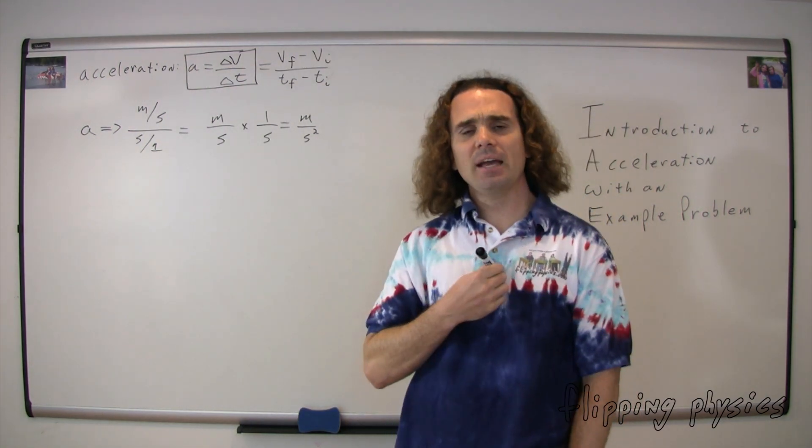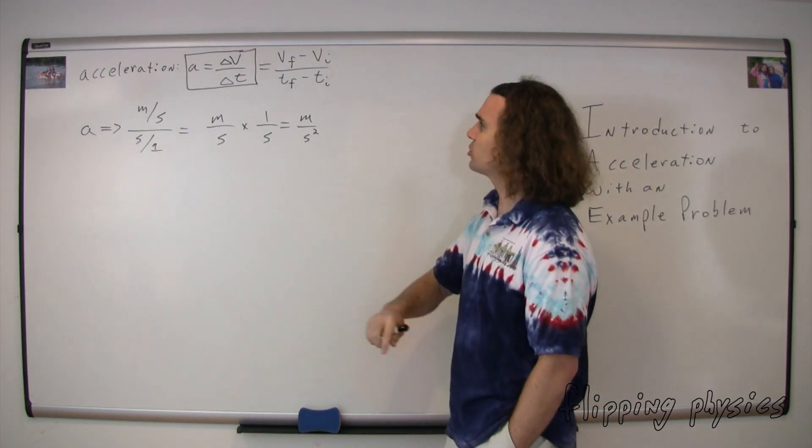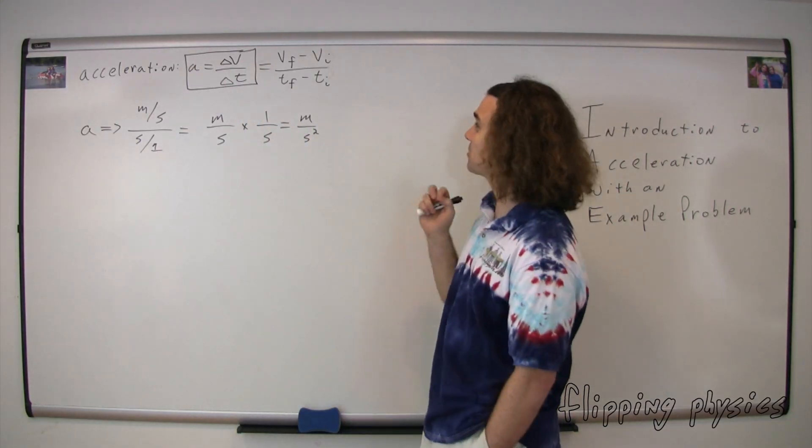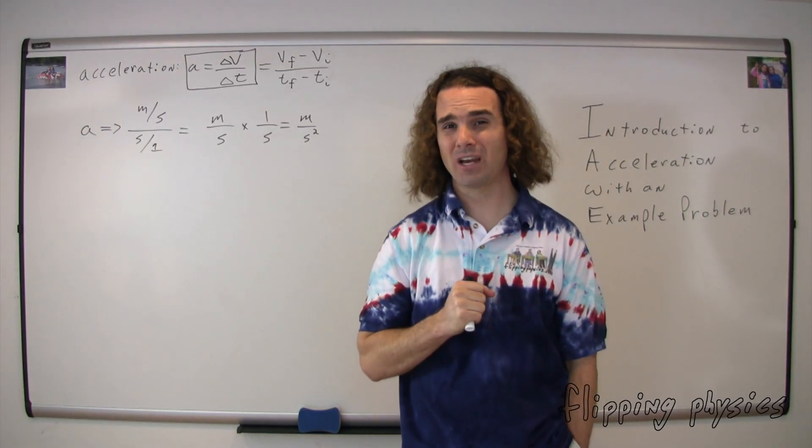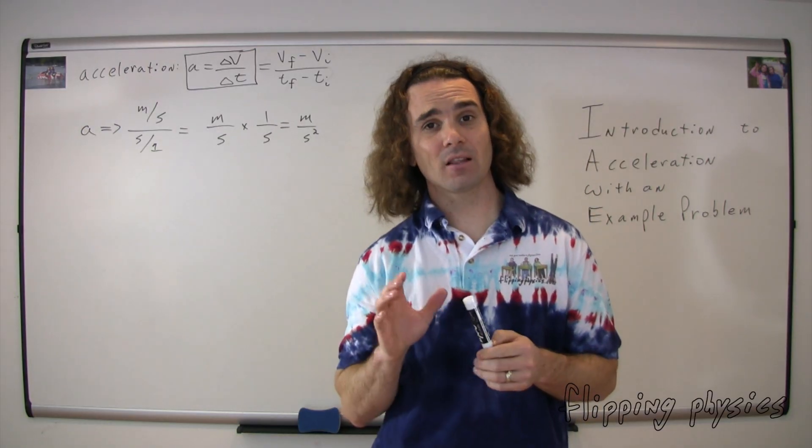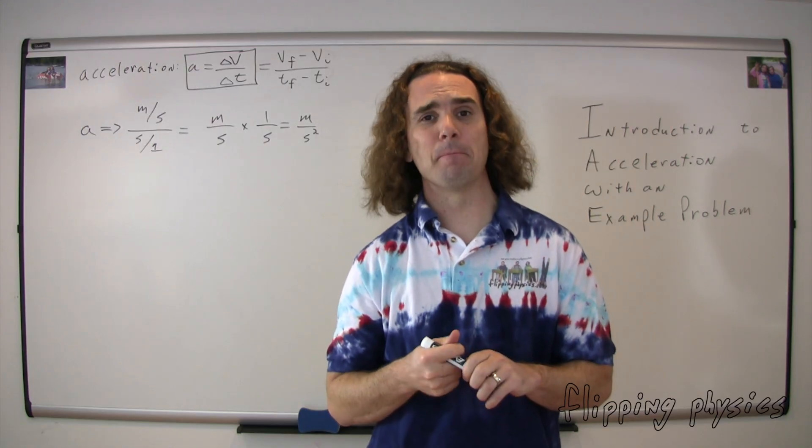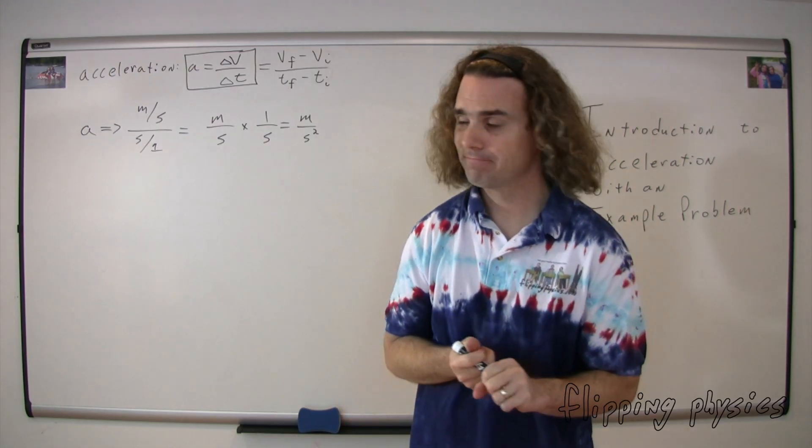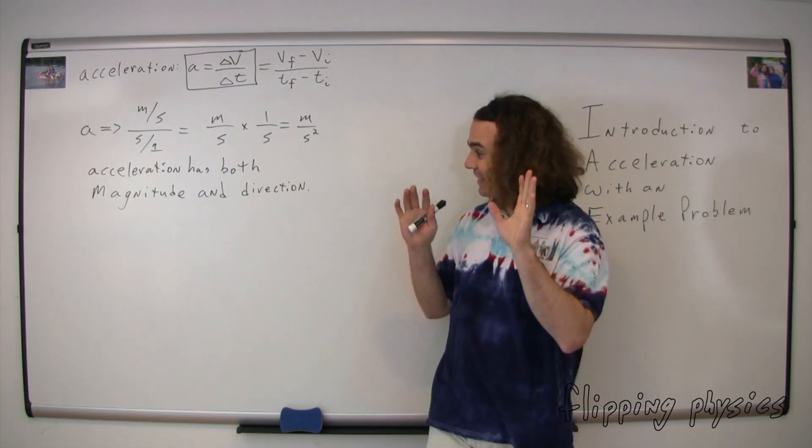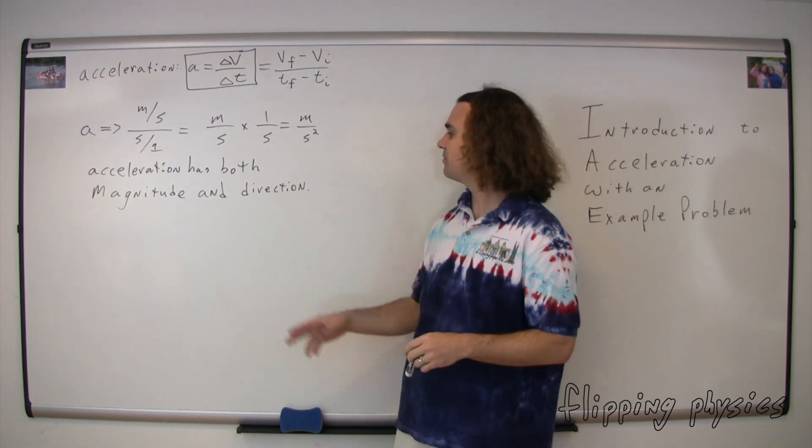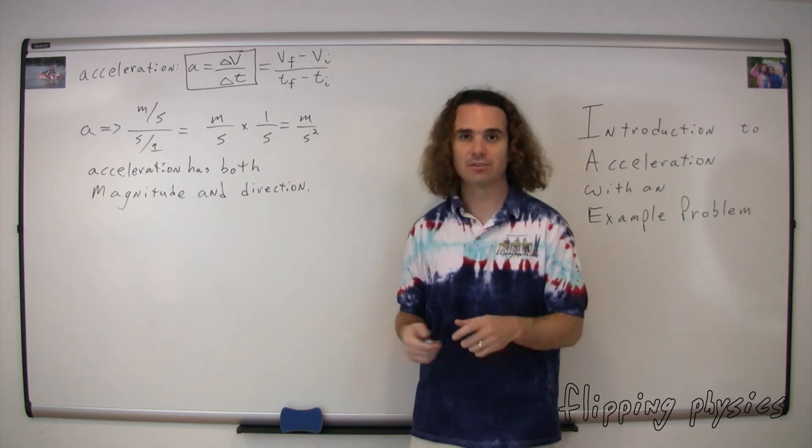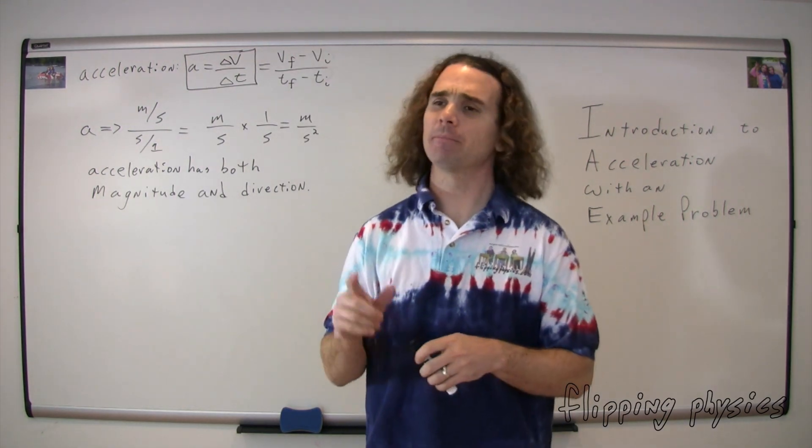Next, please remember that acceleration is in terms of velocity and velocity is in terms of displacement. And therefore, just like displacement and velocity, acceleration has both magnitude and direction. Oh yeah, magnitude and direction. Again, acceleration has both magnitude and direction. Magnitude being the amount or the value of and direction being, well, the direction. Bo, let's work on an example problem. Could you please read it?